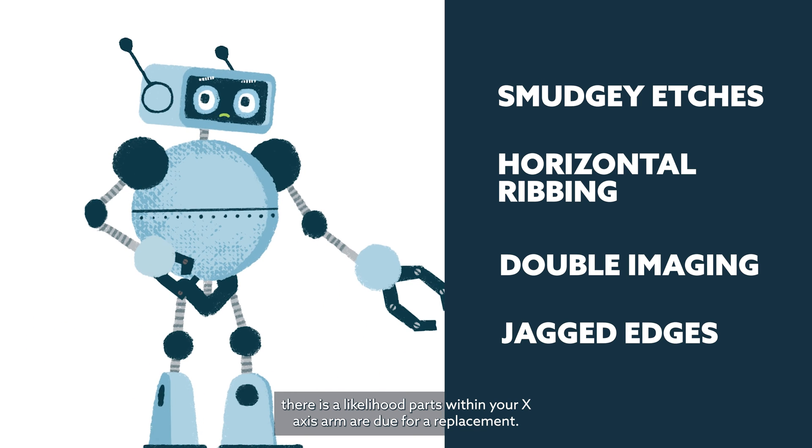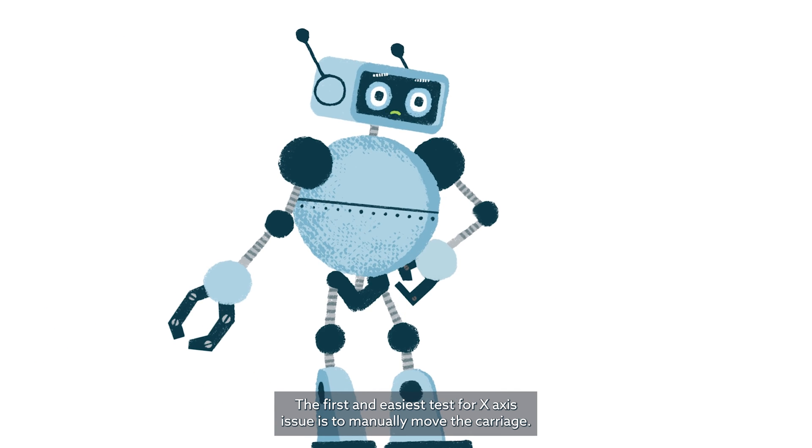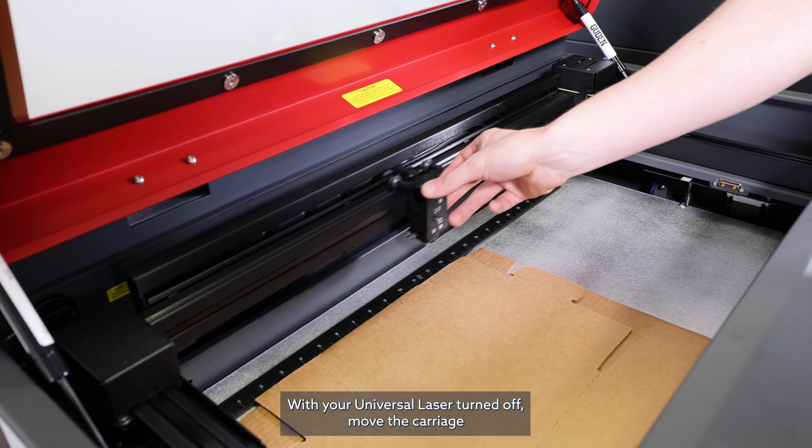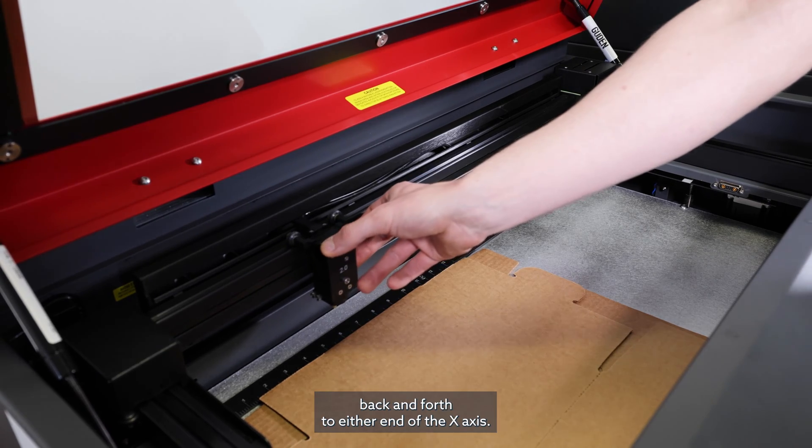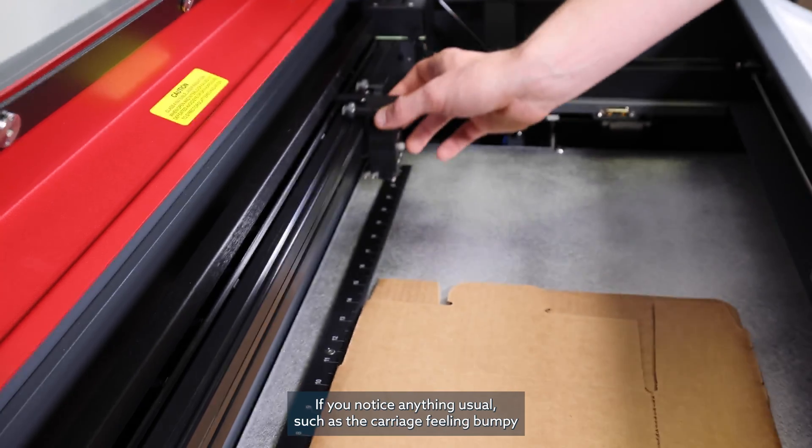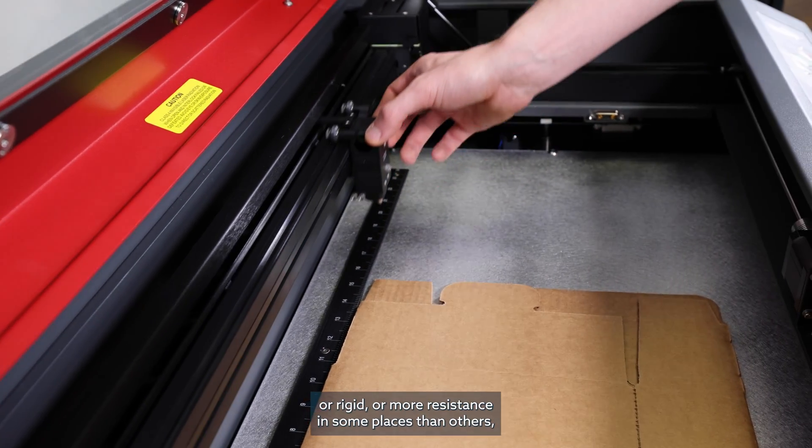The first and easiest test for x-axis issues is to manually move the carriage with your Universal Laser turned off. Move the carriage back and forth to either end of the x-axis. If you notice anything unusual, such as the carriage feeling bumpy or rigid, or more resistance in some places than others, this is your first indication of an x-related issue.